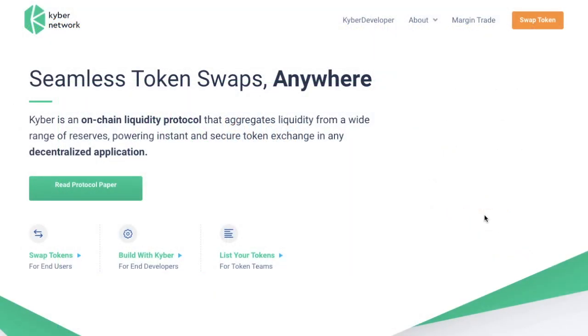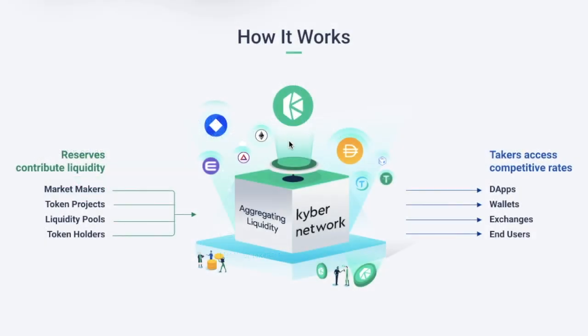Kyber Network is a decentralised way to exchange ETH and different ERC20 tokens instantly with no waiting, deposits or KYC required. To do this, Kyber uses a diverse set of liquidity pools, or pools of different crypto assets called reserves, that any project can tap into or integrate with. So instead of using order books to match buyers and sellers, the Kyber protocol looks at all the reserves and returns the best price among them.